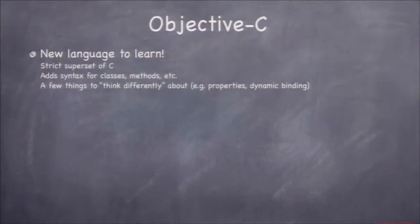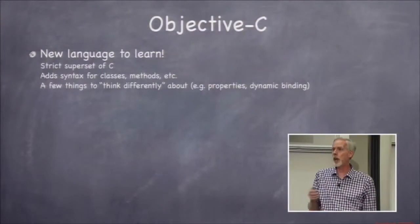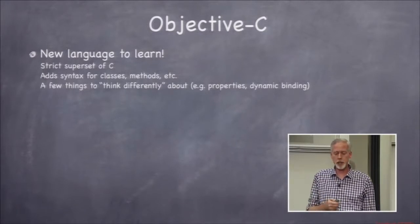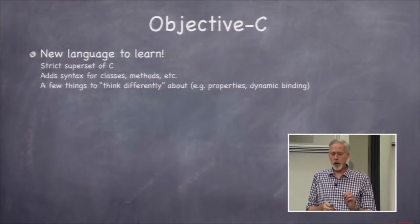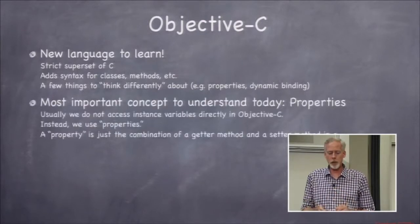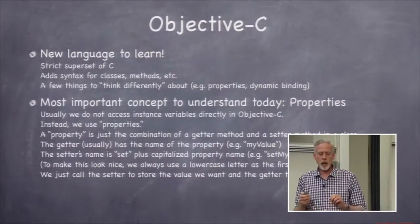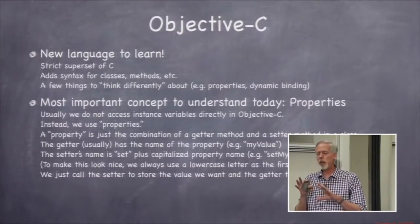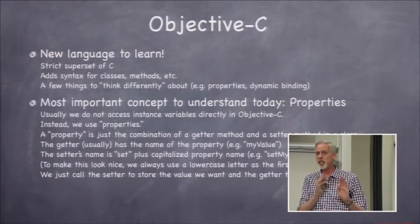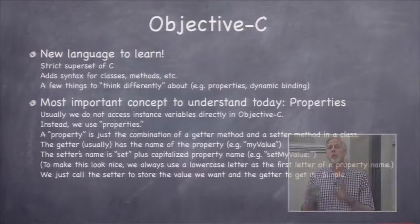Okay, that's MVC. On to Objective-C. Objective-C is a strict superset of C — everything you can do in C, you can do in Objective-C. We'll do a lot of C things in this class as well as a lot of object-oriented stuff. One key difference from C++ or Java is properties, which are basically how we access our instance variables.